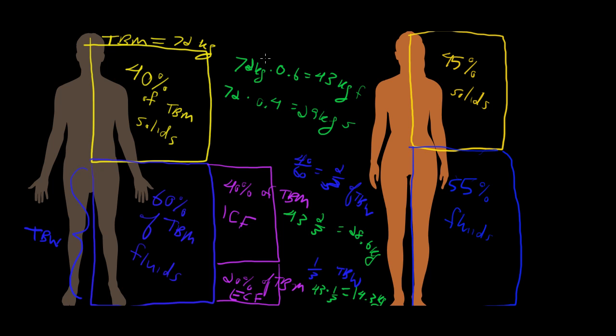You can see there's a pattern here—there's a 60-40-20 rule. 60% of total body mass is total body water, 40% is intracellular fluid. There's a pattern in how the fluid is distributed, and if you remember the 60-40-20 rule, you'll be good to go.